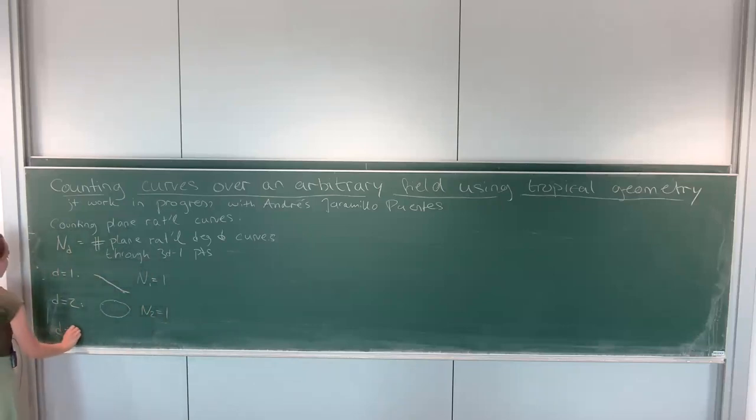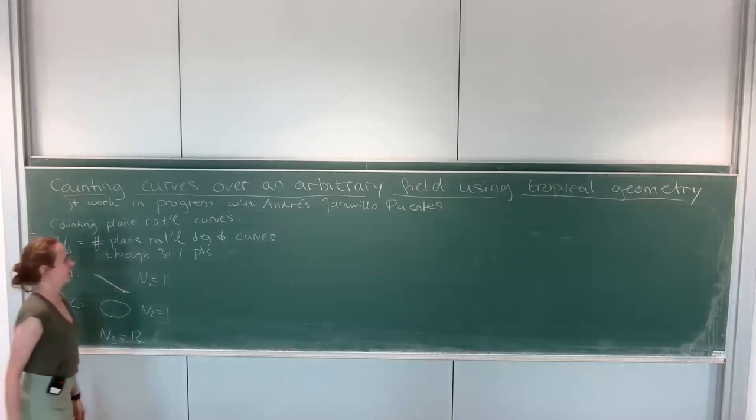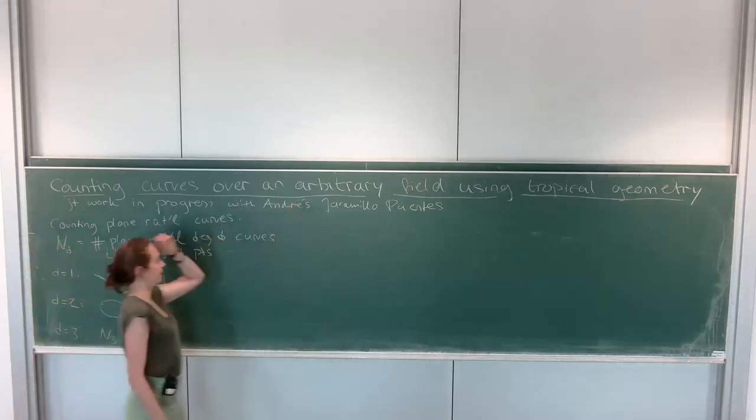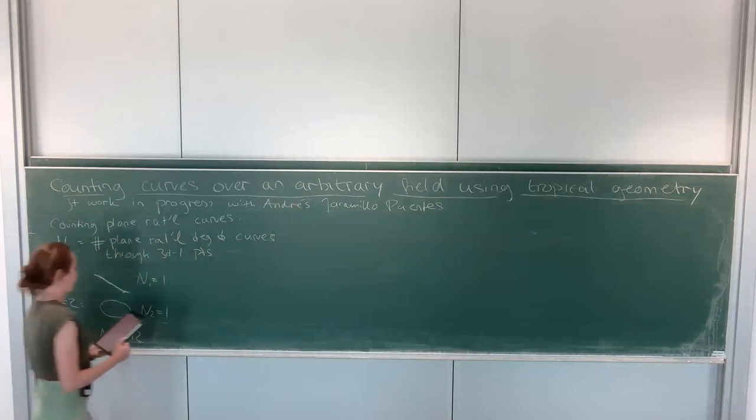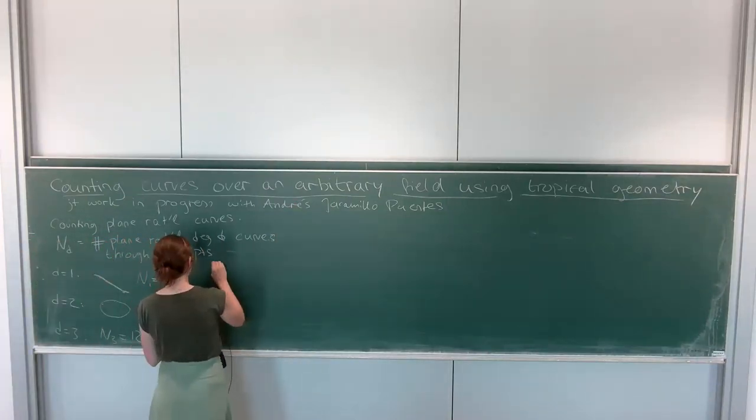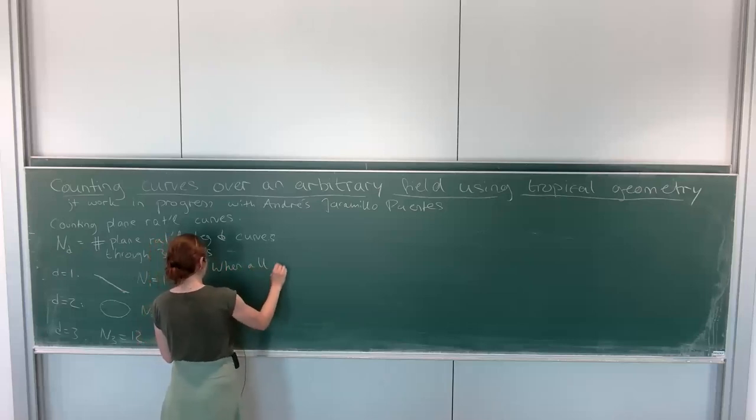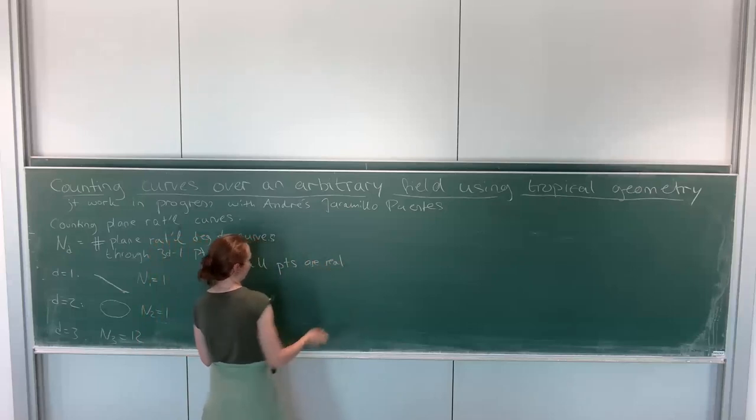But in degree three, this is not one. This is actually 12. So I want you to view these counts now, and I won't go too high, but I want you to view these counts to be the counts over an algebraically closed field, and then you can always find points defined over the field you started with. But let's go to another field, which is not algebraically closed, but let's go to the real numbers, because this is already well known.